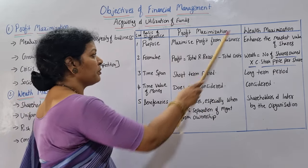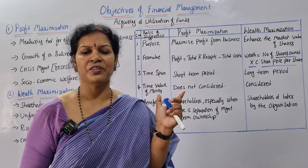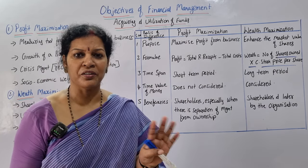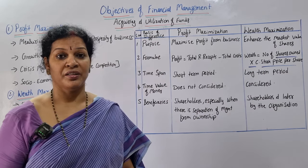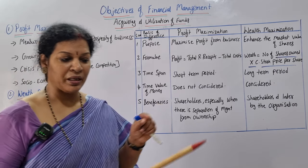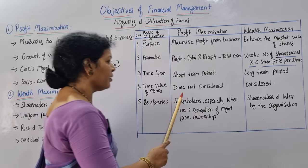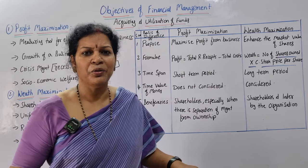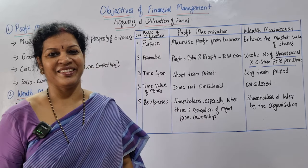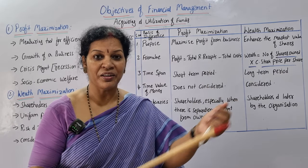Third difference is time span. Profit maximization is a short-term period — profit is temporary, not permanent. Whereas wealth maximization is a long-term concept with lasting effect on the organization. Fourth is time value of money. In profit maximization, time value is not considered — we only see what the profit is at present. In wealth maximization, time value of money is considered; we account for what the value will be after five or ten years.